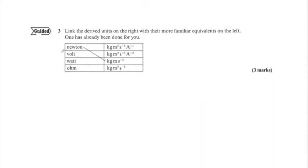Let's try the volt first. The volt is defined as one joule per coulomb, or J·C⁻¹. Neither joule nor coulomb are base units. We know that voltage equals E over Q — energy divided by charge.